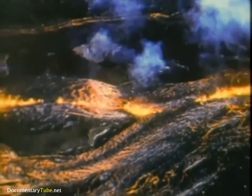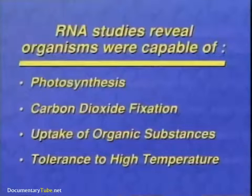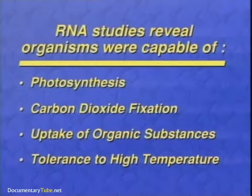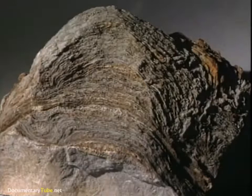Volcanic emanations such as carbon dioxide, ferrous iron, and sulfide gases were much more widespread. However, free oxygen was in very short supply. Furthermore, genetic studies of RNA reveal that organisms capable of photosynthesis, carbon dioxide fixation, uptake of organic substances, and tolerance of elevated temperatures already existed early in the history of life.